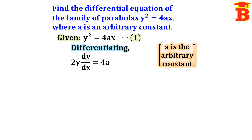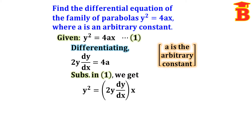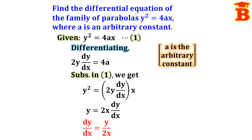Now we have to eliminate the constant a using substitution. From the differentiated result, 4a equals 2y dy/dx. Substituting into equation 1: y squared equals 2y (dy/dx) times x. Cancelling y from both sides gives y equals 2x dy/dx, so dy/dx equals y divided by 2x.